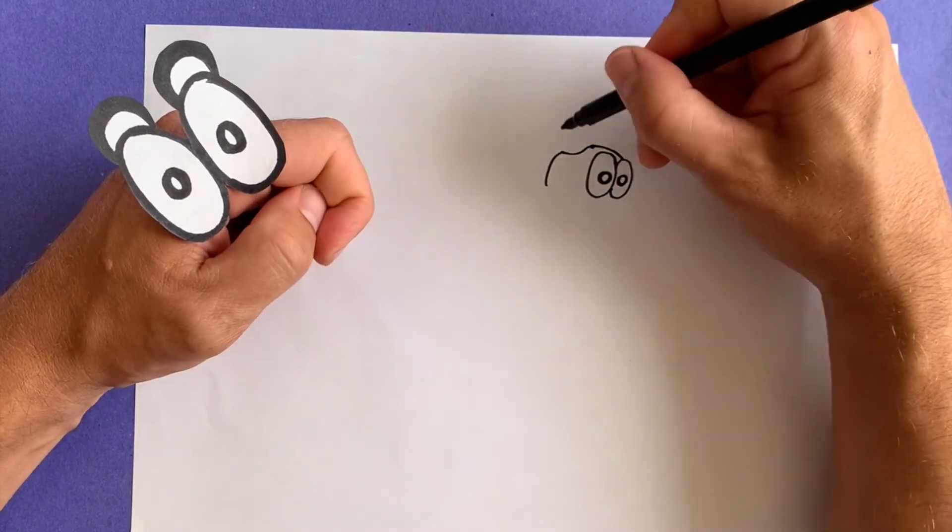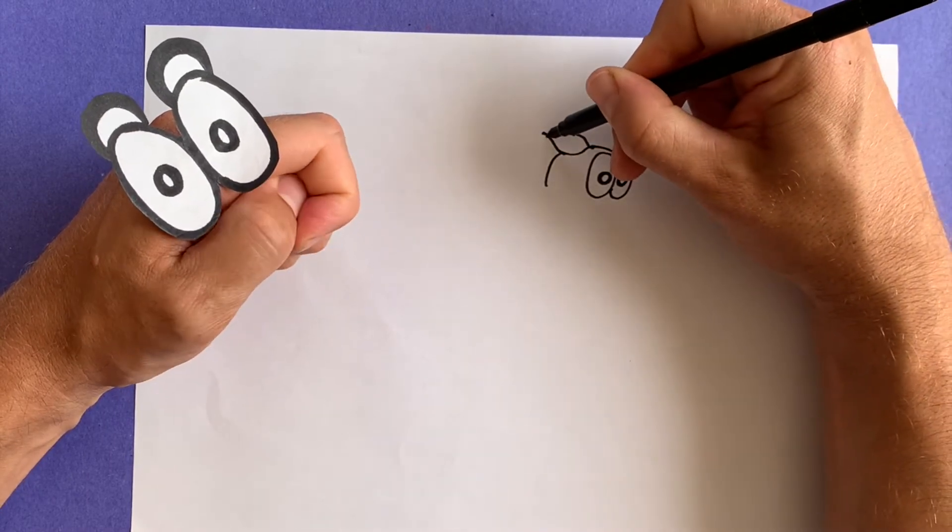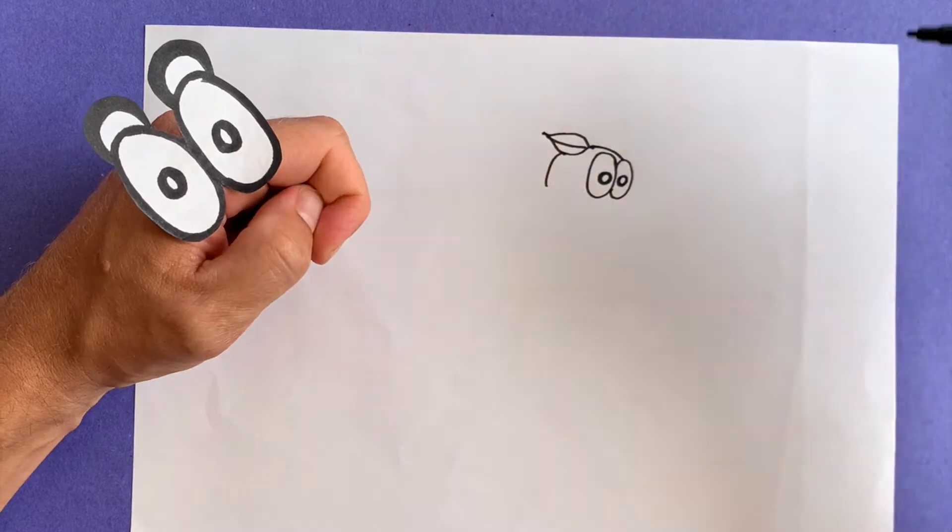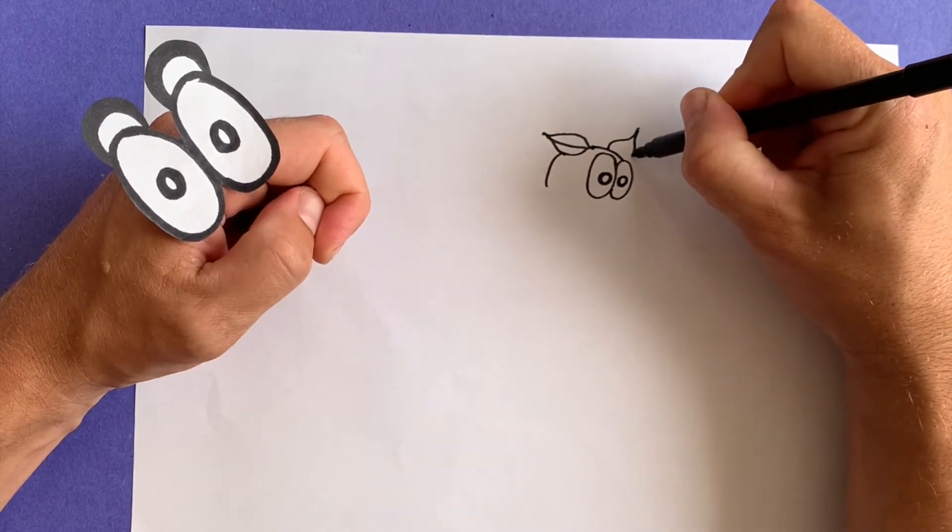Next, let's draw her ear! So come up! And down! And draw a line! Ta-da! Let's draw her other ear! Ta-da!